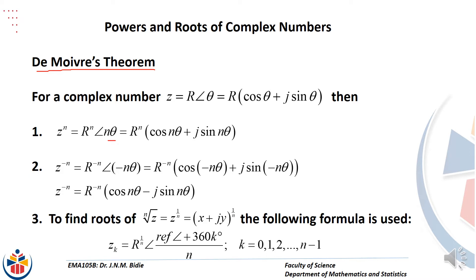As we know, cis nθ means cos nθ plus j sin nθ based on Euler's formula. This means that even if the power is negative n, then the power of r will be negative n and negative n will multiply theta, which is the argument. Remember that cos of negative theta is cos theta because it's in the fourth quadrant, and sin of negative theta is negative sin theta.